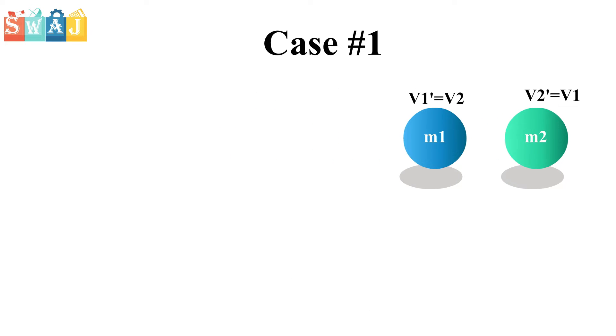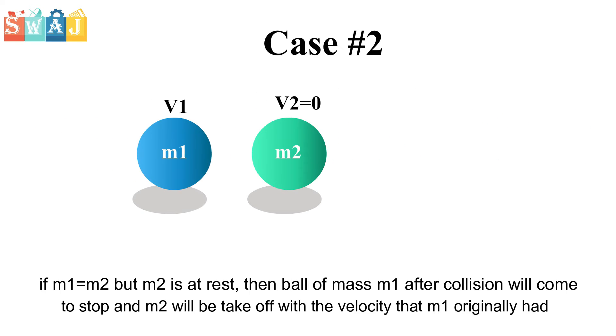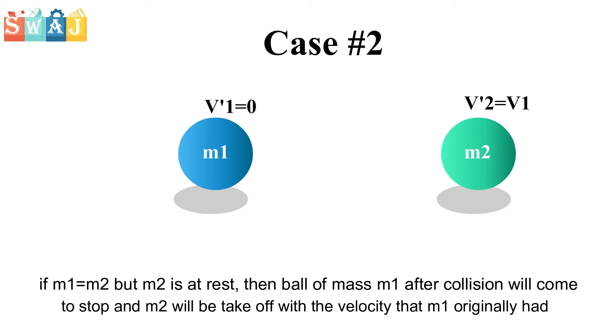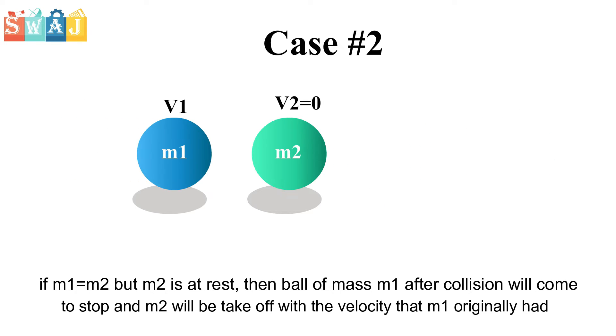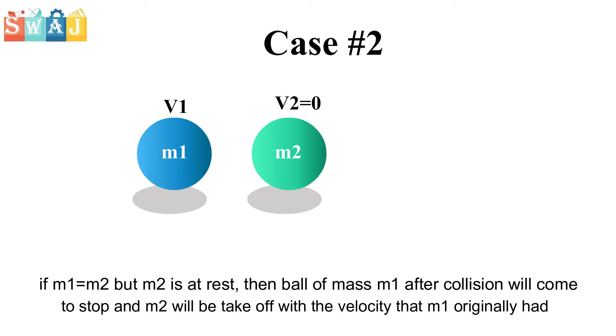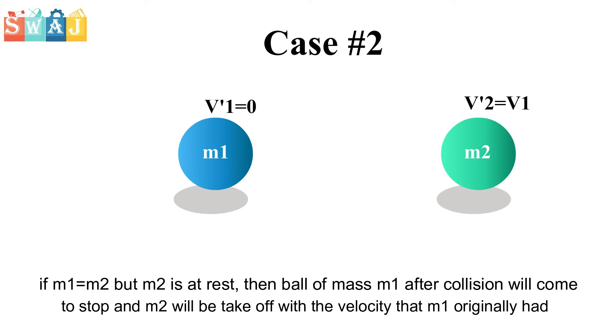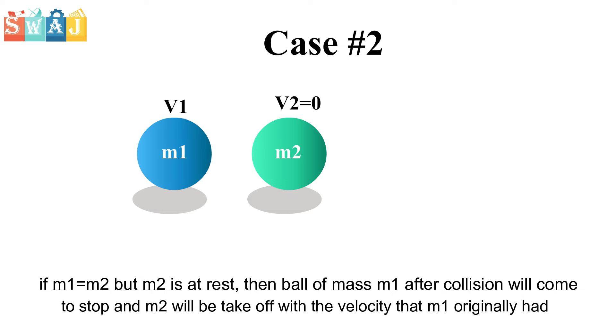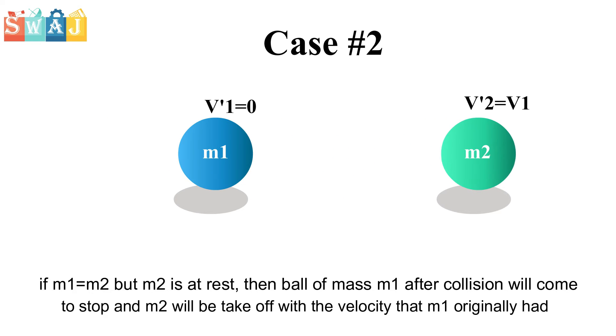Second case: If M1 is equal to M2 but M2 is at rest, then the ball of mass M1 after collision will come to a stop, and M2 will take off with the velocity that M1 originally had.